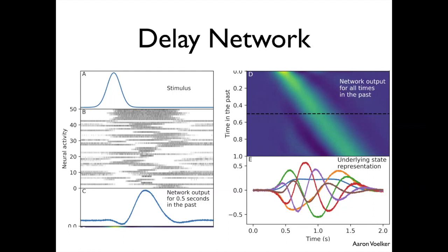We also do purely theoretical work. One really fun recent result comes from Aaron Voelker and his work on what we call the Delay Network. It essentially tries to answer: if I have an input changing over time and want to remember it, what's the most efficient way? This seems like a simple task but has relevance to biology. Aaron answered it and discovered the Delay Network — a particular kind of recurrent neural network that is provably optimal for exactly this delay task.